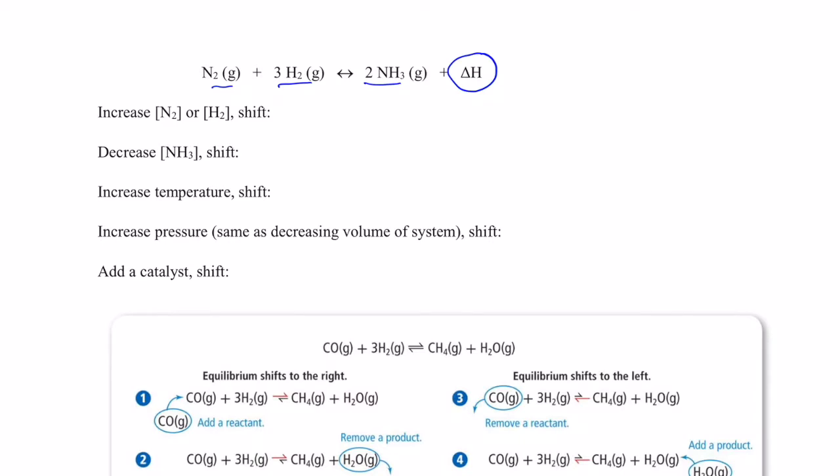So, let's start stressing this system out. One way we can stress this system is by adding gaseous reactants or products. So, if I add nitrogen gas or hydrogen gas and increase their concentrations, I want to use them up.